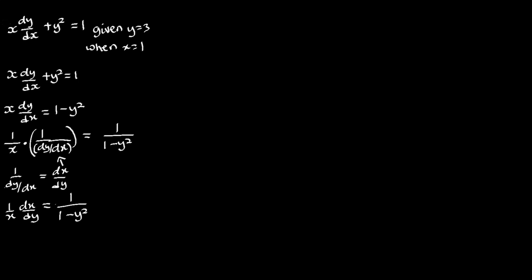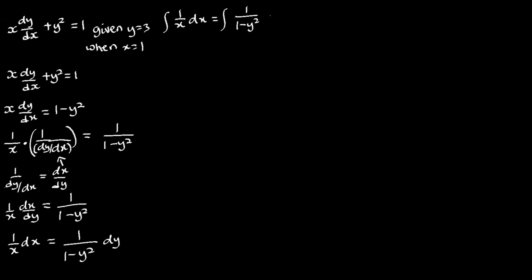From here, what I'll do is multiply both sides by dy, so that I can get rid of the dy on the left-hand side and get a dy on the right-hand side. When I do this, we are going to have (1/x) dx equal to 1 over (1 minus y squared) dy. From here, we can bring the integral symbol, so we are going to have the integral of 1/x dx equal to the integral of 1 over (1 minus y squared) with respect to y.